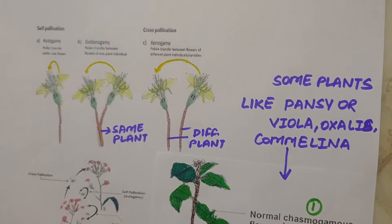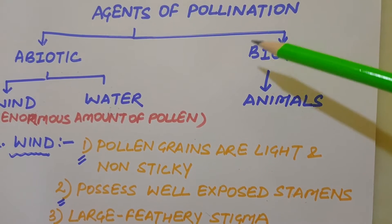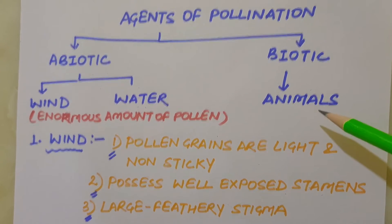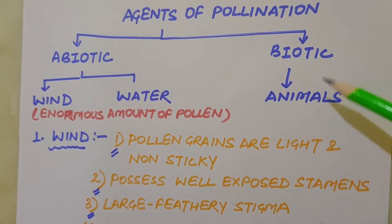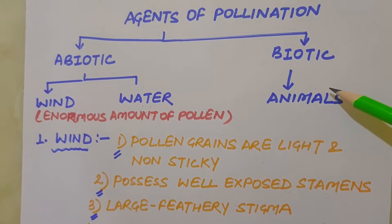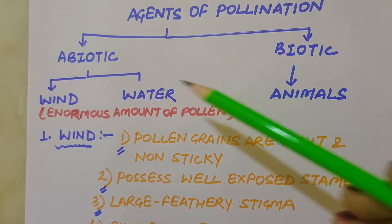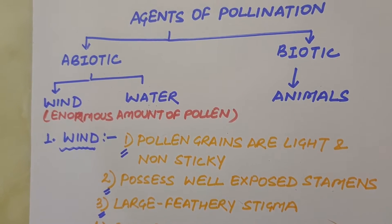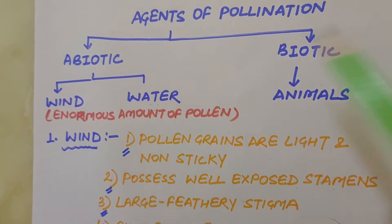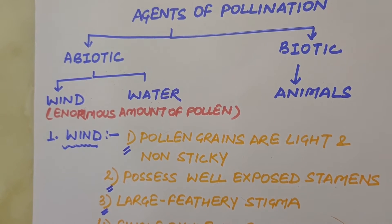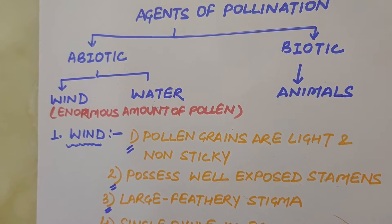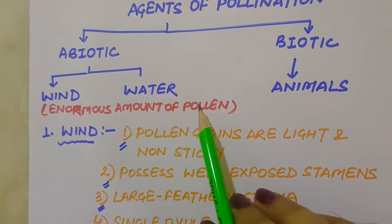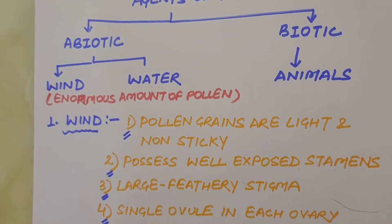Now we come to agents of pollination. Plants use two abiotic agents — wind and water — and biotic agents — animals — to achieve pollination. Majority of plants use biotic agents for pollination; only a small proportion use abiotic agents. Pollen grain coming in contact with the stigma is a chance factor in both wind and water pollination. To compensate for these uncertainties and associated loss of pollen grain, flowers produce enormous amounts of pollen compared to the number of ovules available.